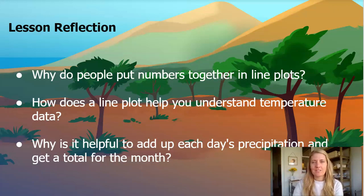Here are your three questions. If you want to write them down, you can always pause the screen. Why do people put numbers together in line plots? How does a line plot help you understand temperature data? And why is it helpful to add up each day's precipitation and get a total for the month?